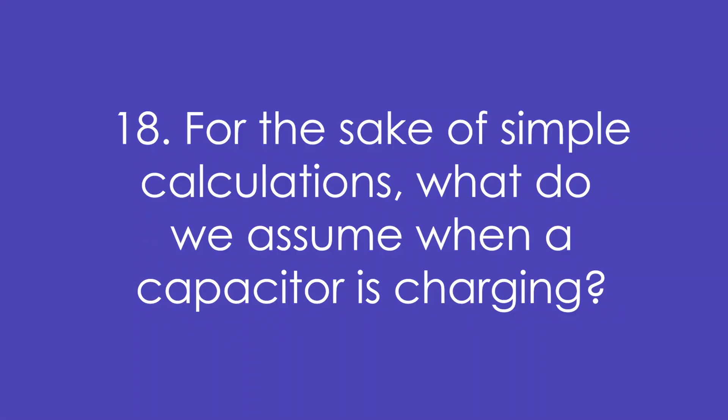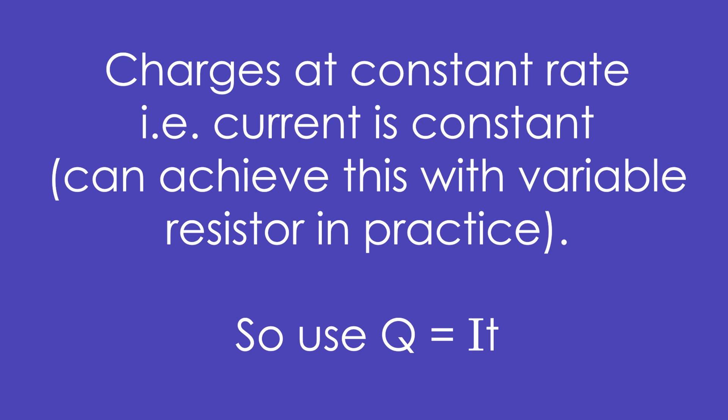Eighteen, for the sake of not overcomplicating things, what do we assume when a capacitor is charging? We assume it charges at a constant rate. In other words, current is constant. That allows us to use Q equals IT.